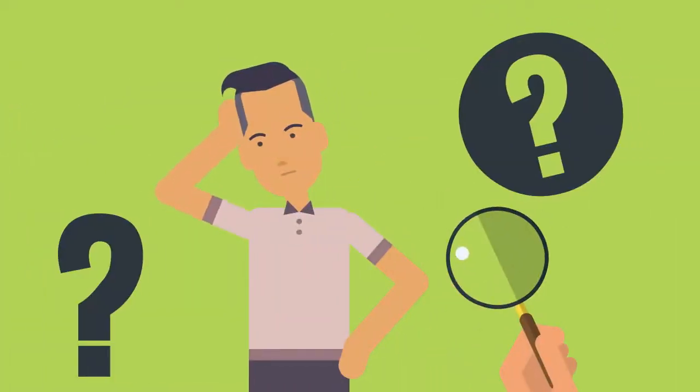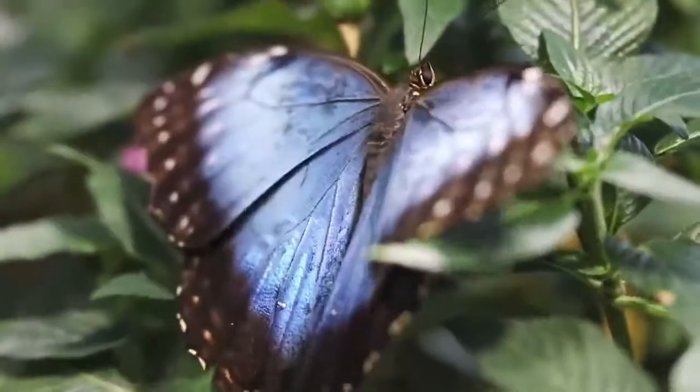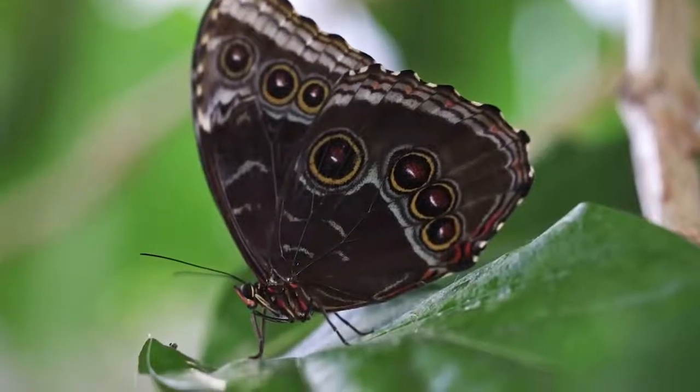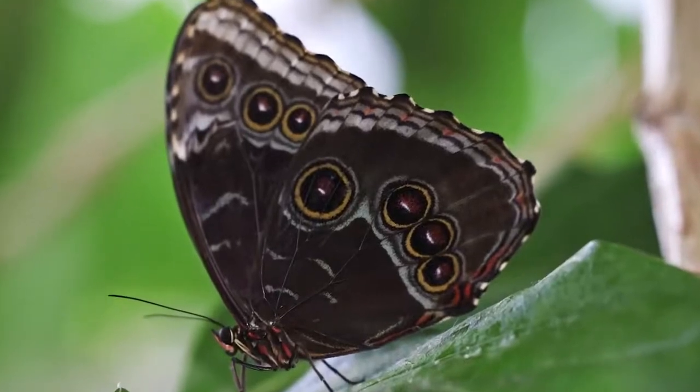How so? As they fly, the color underneath their wing changes from bright blue to a dull brown. So as they move their wings up and down, they seem to disappear and then reappear.